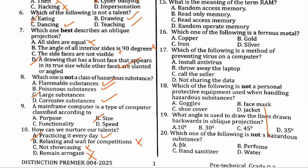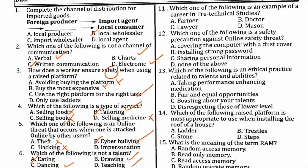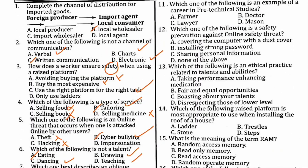Number eleven: which of the following is an example of a career in pre-technical studies? A farmer — no, that is agriculture. Lawyer — no. Doctor — no, that is science/medicine. Mason — yes. So the correct answer is masonry, that is a mason.